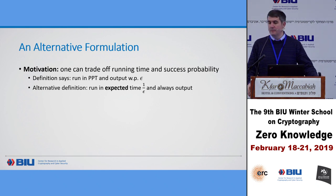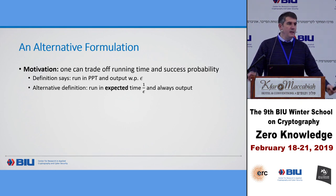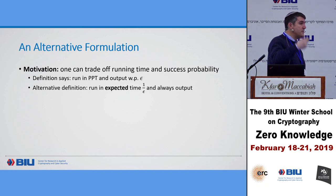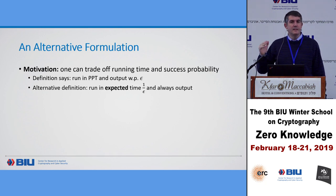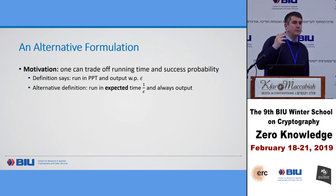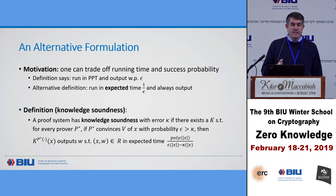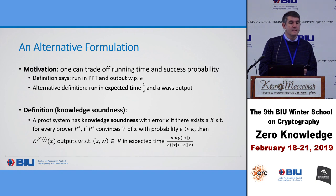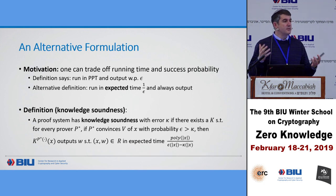The definition says we can run in probabilistic polynomial time and output a witness with probability epsilon. What if I run this one-over-epsilon times? In each attempt I succeed with probability epsilon; if I run one-over-epsilon times, the expectation is that I'll succeed. And if I run n-over-epsilon times where n is a security parameter, the probability that I fail becomes negligible in n. So I can repeat many times and have a very high probability of outputting a witness.